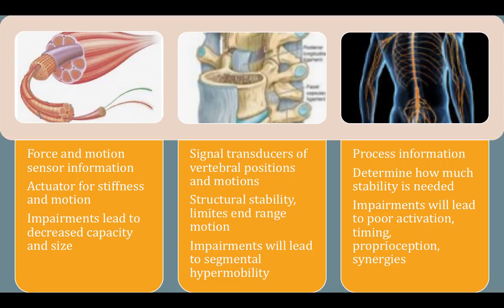Notice that I said hypermobility and not instability. Instability only occurs when hypermobility becomes symptomatic. For some individuals, our active and neural systems can compensate for impairments in this passive system. The neural system processes all the information from active and passive and decides what needs to happen. This is where our motor control deficits are seen, including poor activation, poor timing, poor proprioception, etc. Simply pain, with or without tissue damage, can cause impairments in this system and thus impairments in motor control.